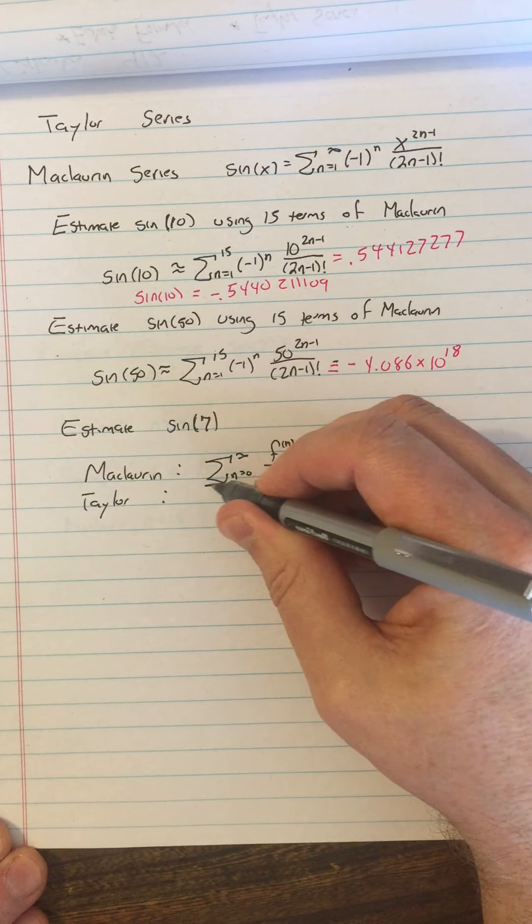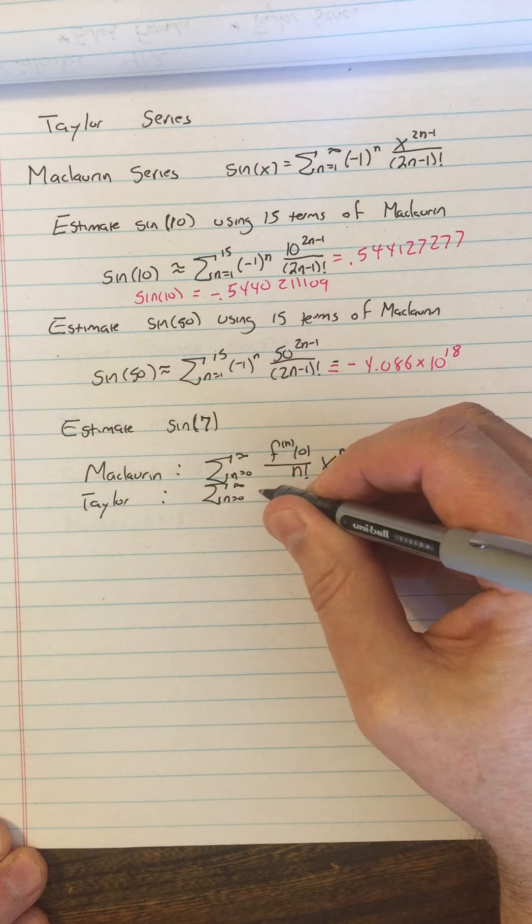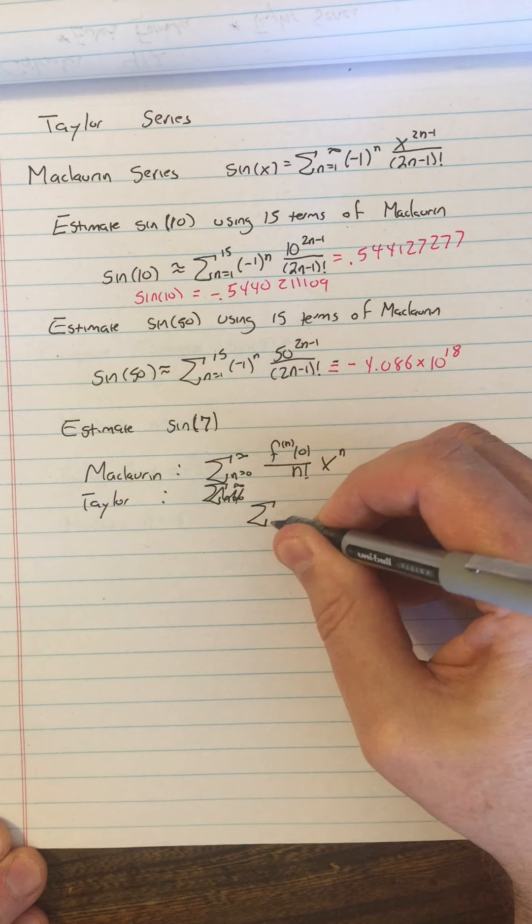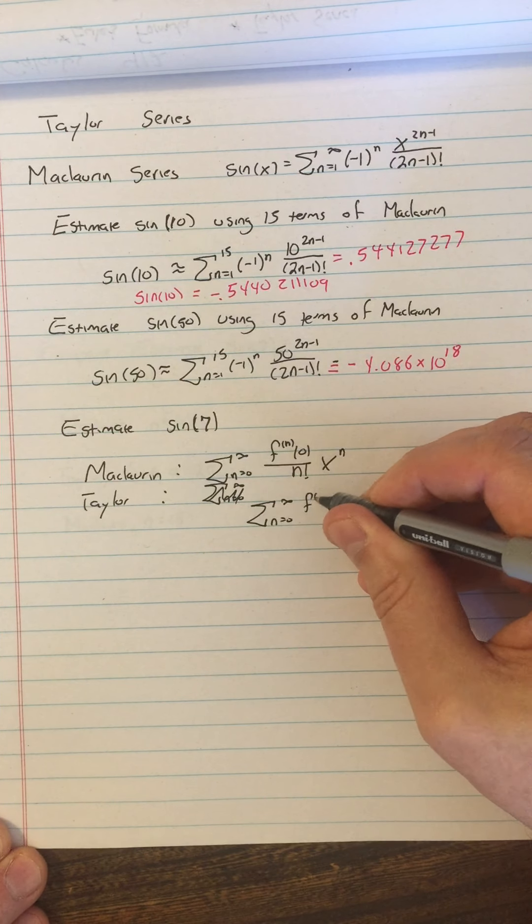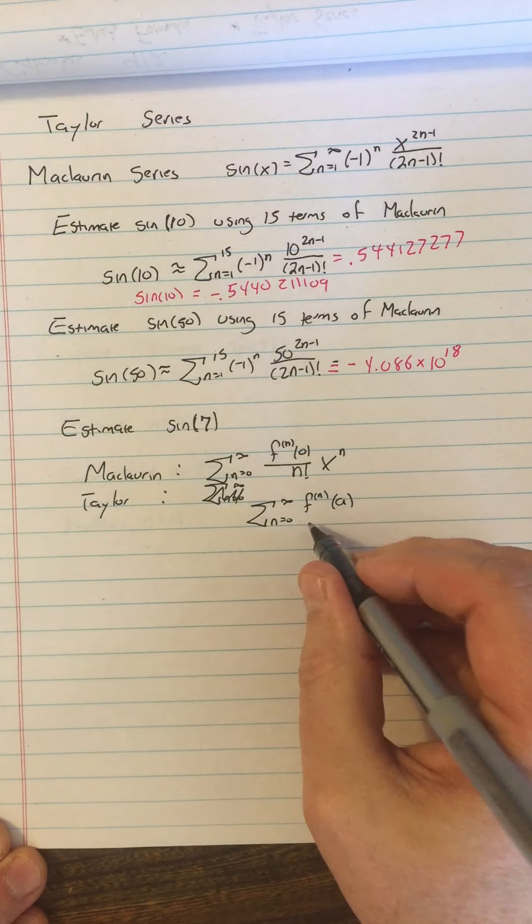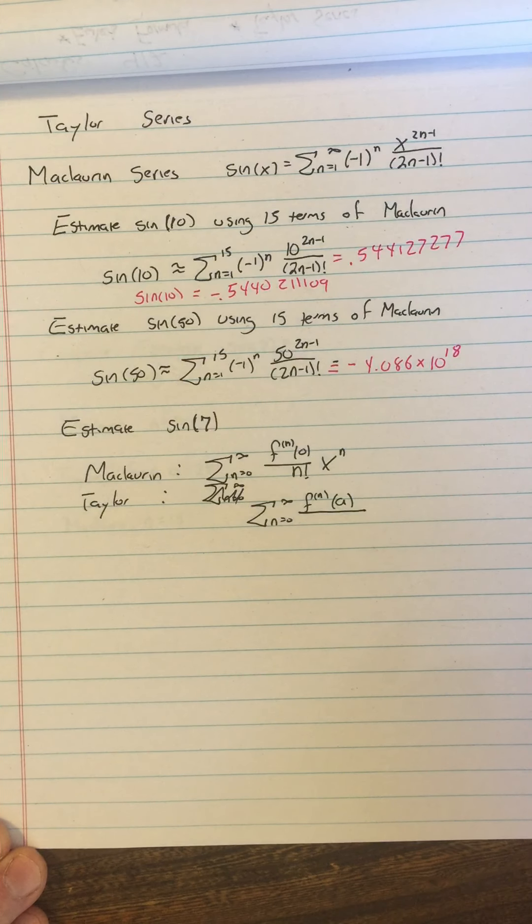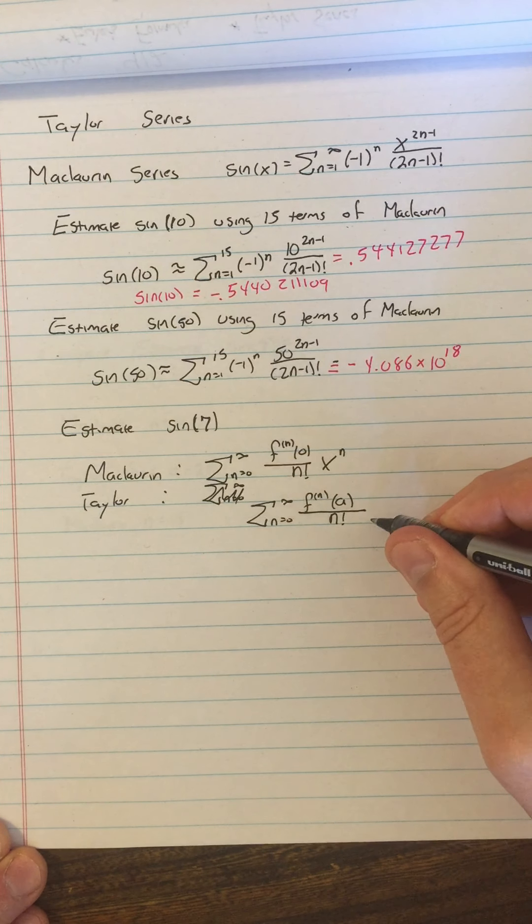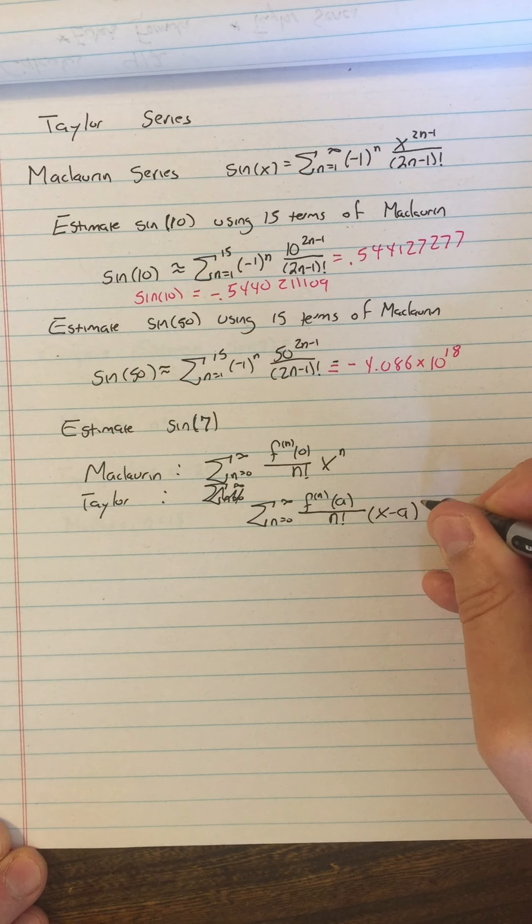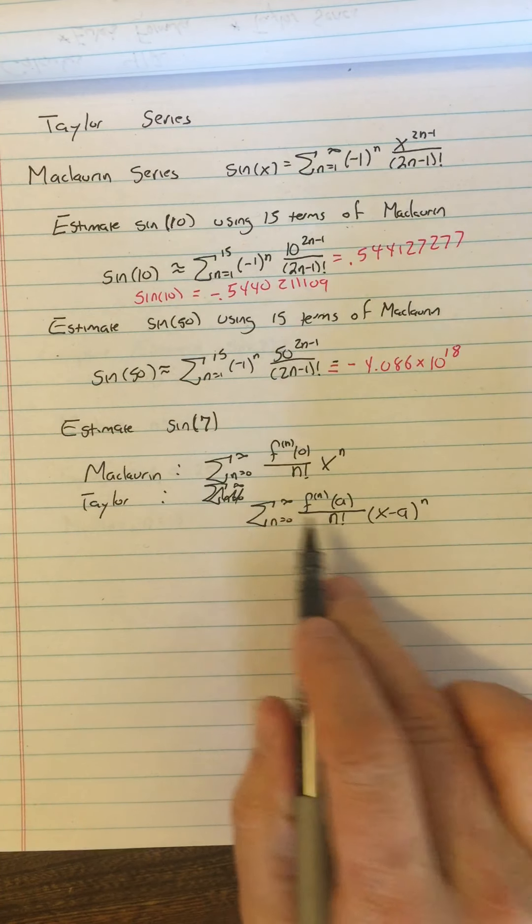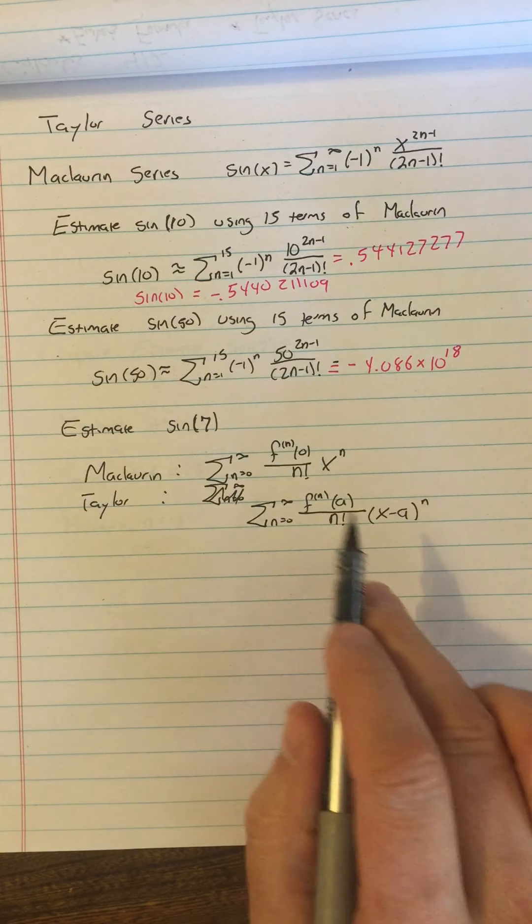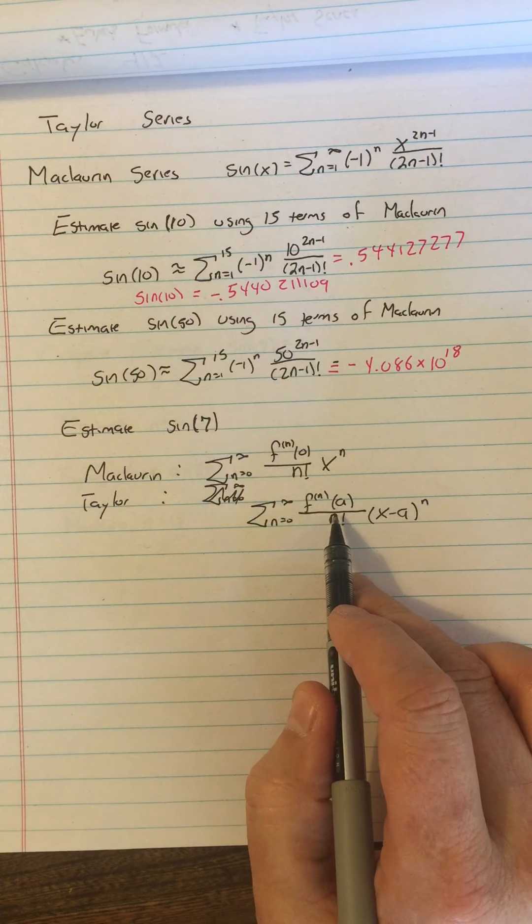The Taylor series modifies that. Taylor series works like this. It's the sum from n equals zero to infinity of the nth derivative at some value a. And this a is what's going to move that graph we were looking at off the center of zero over n factorial times x minus a to the n. So this is the modification, the difference between Taylor and Maclaurin. It's just instead of x, we have x minus a. Instead of f n's of zero, we have f n's of a.